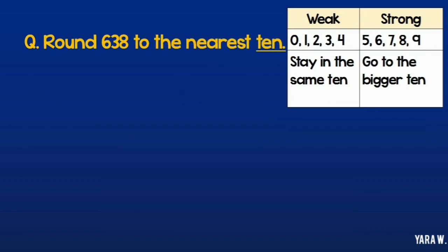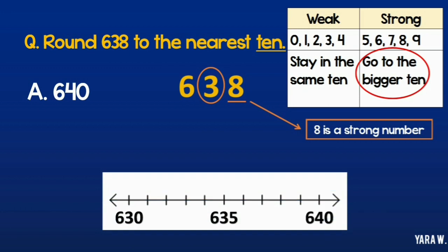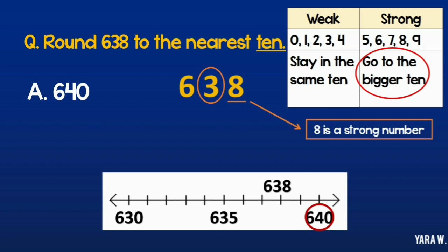Here's another example. Round 638 to the nearest 10. Here's 638. Step 1: Circle the tens. I am going to circle the 3. Step 2: Underline what's after it, which is 8. Now 8 is a strong number. So it means I am going to go to the bigger 10. So I am going to go to the 40. The answer is 640. Let's check on the number line. 638 is between 630 and 640, but it's closer to 640.